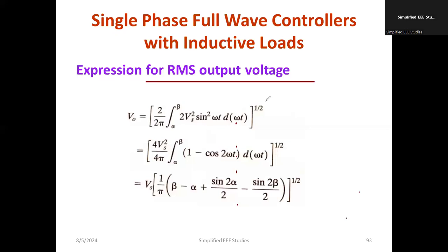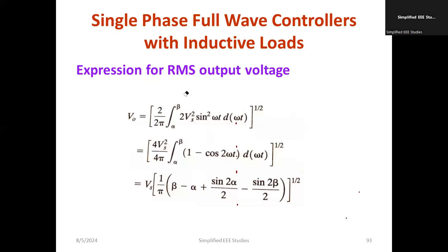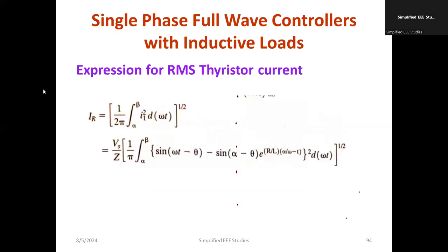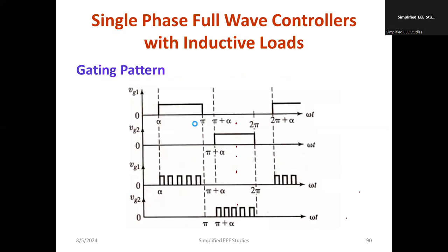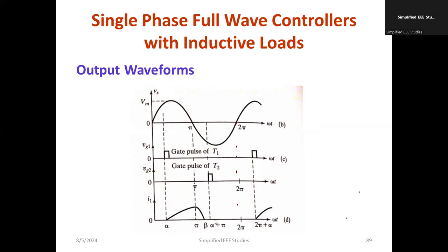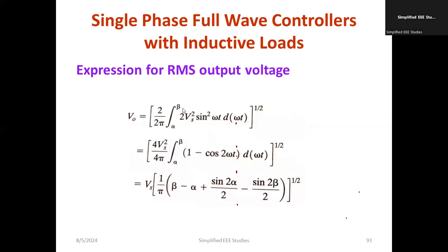The expression for RMS output voltage of a single phase controller with inductive load is: V_rms equals square root of (1 divided by 2pi) times the integral from alpha to beta of Vs-squared times sin-squared(omega-t) d(omega-t). Simplifying gives Vs times the square root of (1 divided by pi) times (beta minus alpha plus sin(2-alpha) divided by 2 minus sin(2-beta) divided by 2).